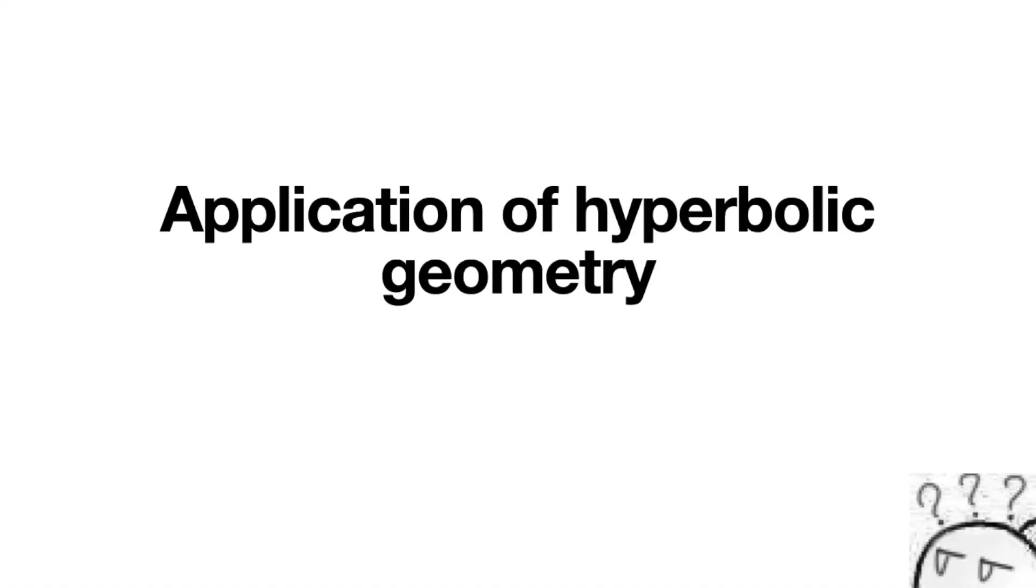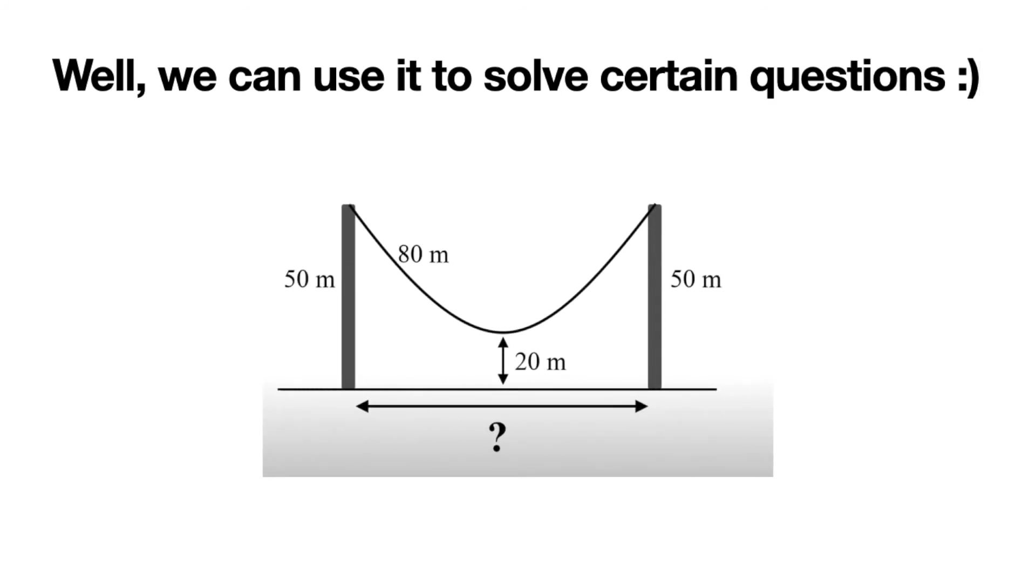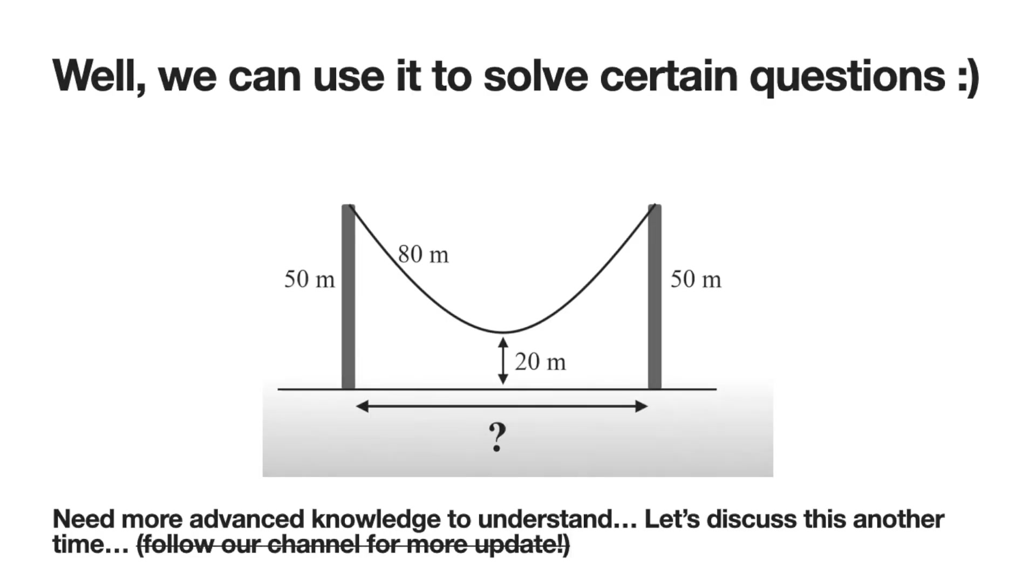Last but not least, let's discuss the applications of hyperbolic geometry. One application would be in questions such as this, where a cable or a rope is at rest when being hung between two poles. The shape of the cable will simulate that of a cosh function. The reason behind this phenomenon can only be explained with advanced calculus and hence won't be covered here.